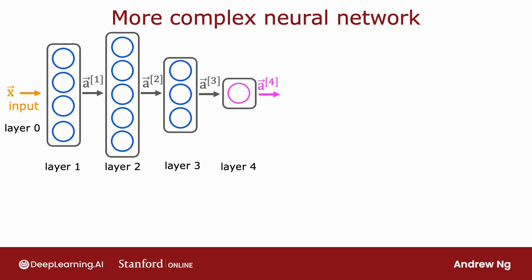Let's take a look. This is the running example that I'm going to use throughout this video as an example of a more complex neural network. This network has four layers, not counting the input layer, which is also called layer zero, where layers one, two, and three are hidden layers and layer four is the output layer. By convention, when we say that the neural network has four layers, that includes all the hidden layers and the output layer, but we don't count the input layer.